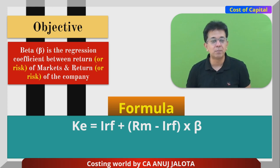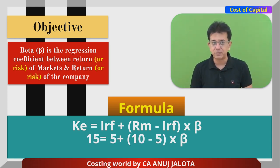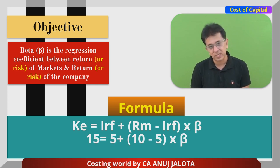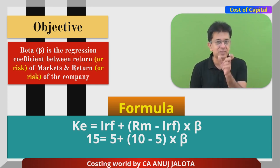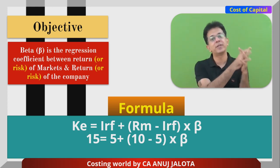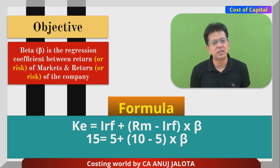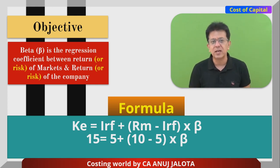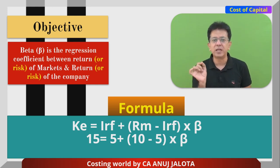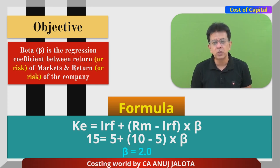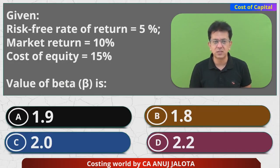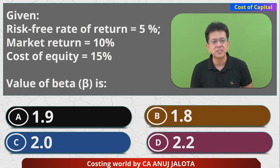Now let's plug in the numbers from this question. IRF is 5%, so: 5% + (10% − 5%) × Beta = KE = 15%. Shifting 5 to the other side: 10 = 5 × Beta factor. Therefore, Beta factor = 2. So out of all the options, option C is the correct answer.